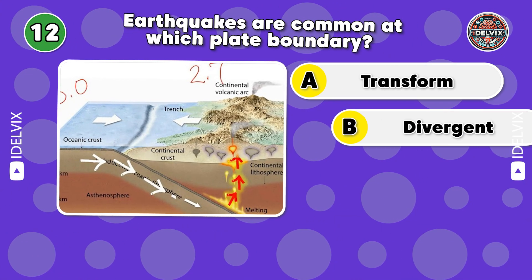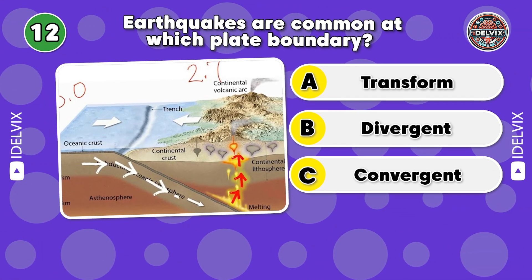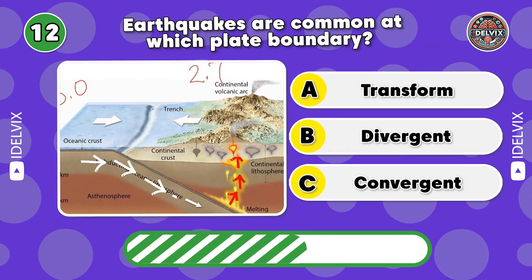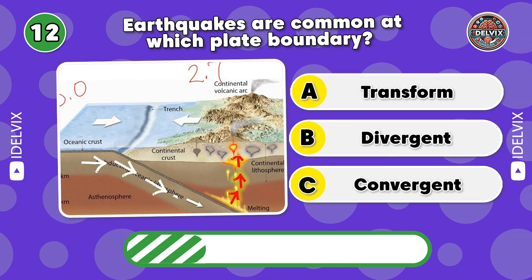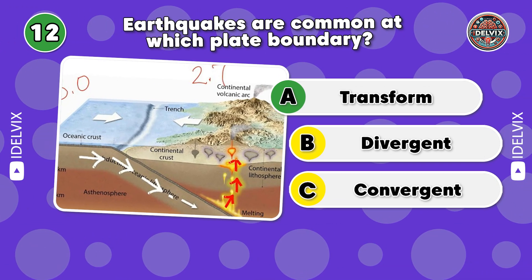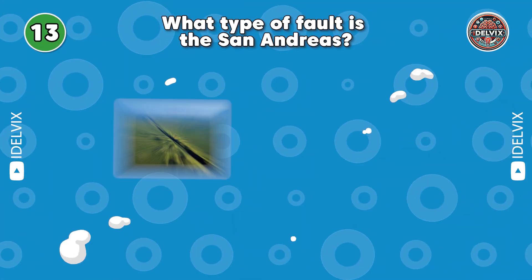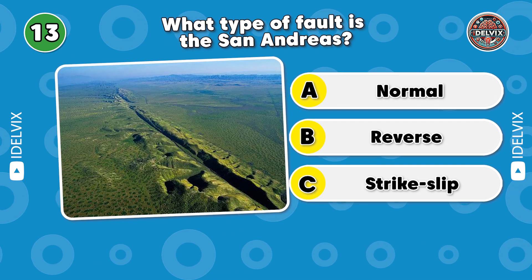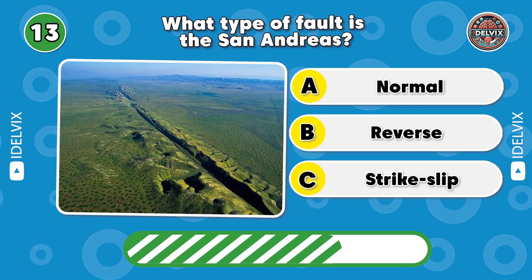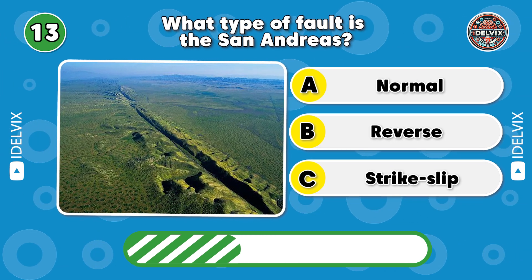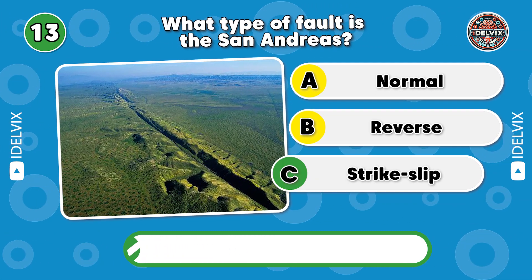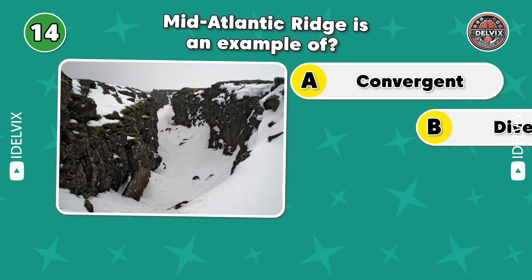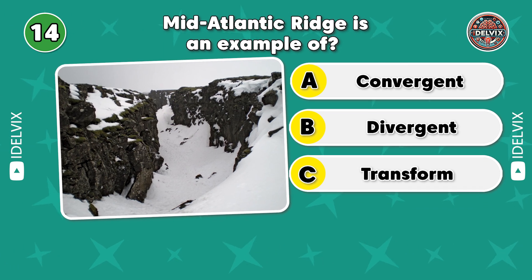12. Earthquakes are common at which plate boundary? Answer: Transform. 13. What type of fault is the San Andreas? Answer: Strike-slip.